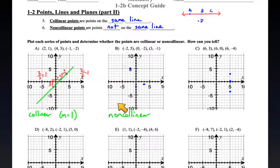So, B, these are non-collinear. Clearly, the slopes are very different. That's a negative slope. That's a positive slope.